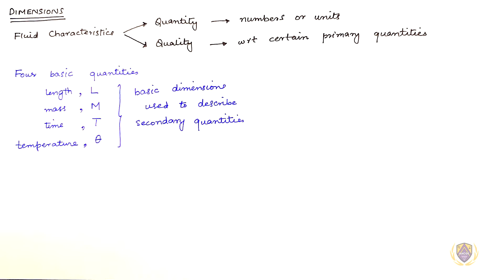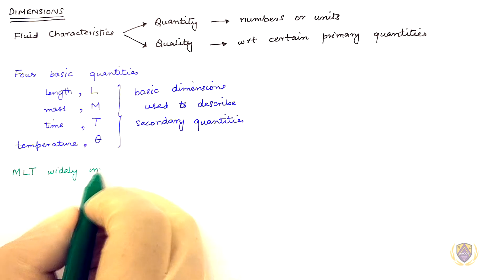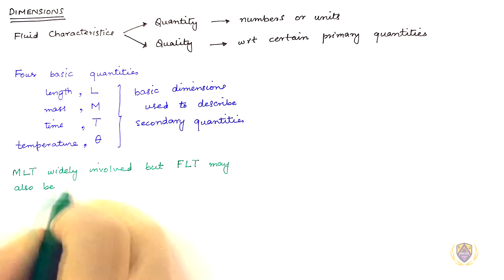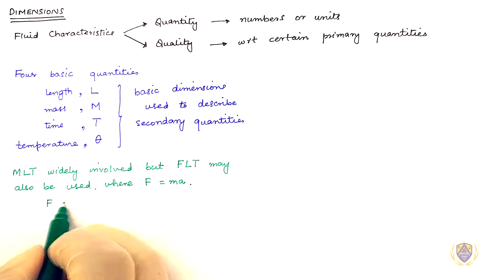For expressing most fluid characteristics, M, L, T is widely involved but F, L, T may also be used where F equals M A, which gives us F equals M L T minus 2. So for stress equal F over A, we may simply use F L minus 2, instead of M L minus 1 T minus 2.